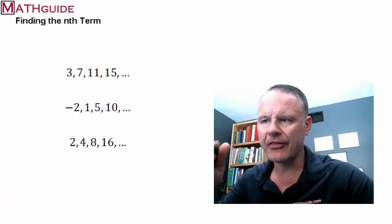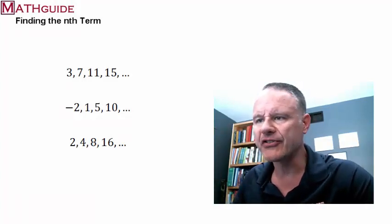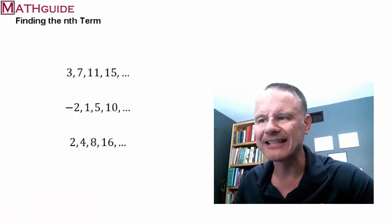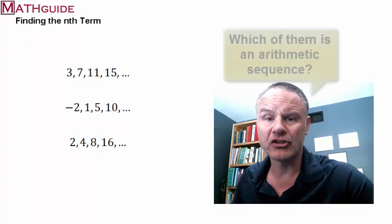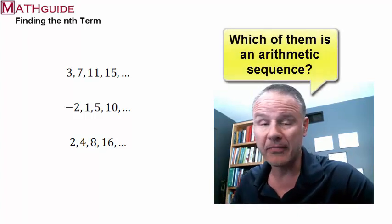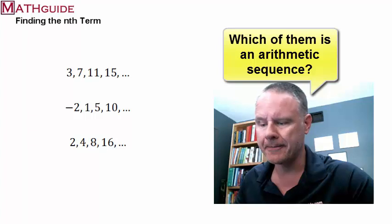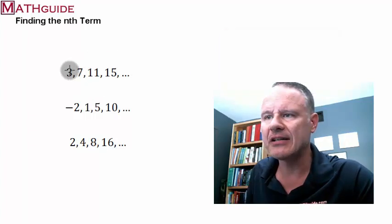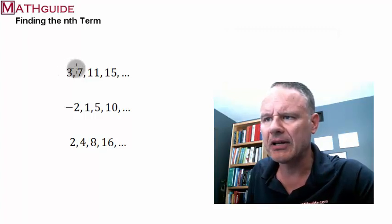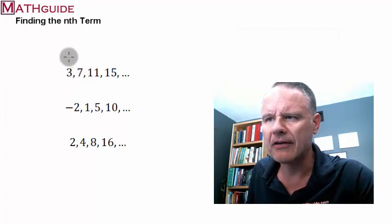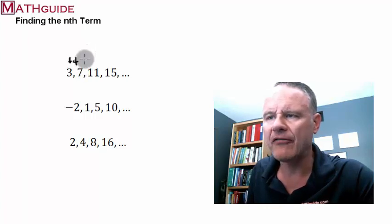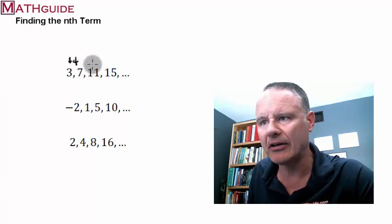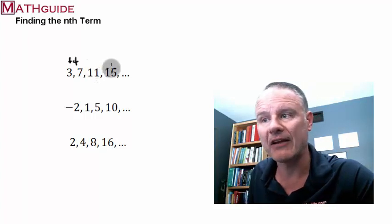You can clearly see that there are three sequences of numbers there. And what we'd like to do is determine which of them, if any, are arithmetic. So, when you look at the first sequence of numbers, you could see that three plus four, if I add four, I get seven. If I add four to seven, I get 11. If I add four to 11, I get 15.